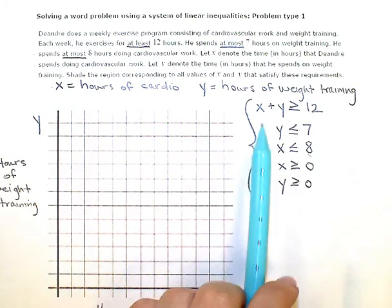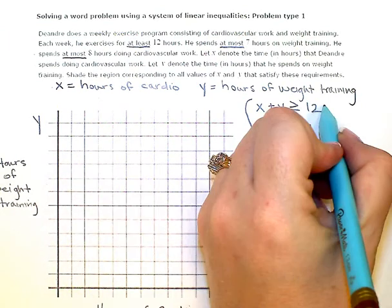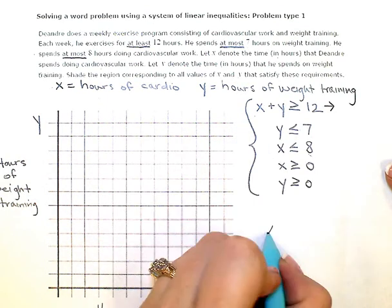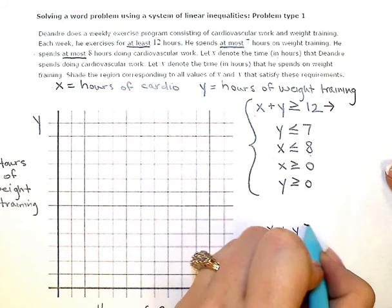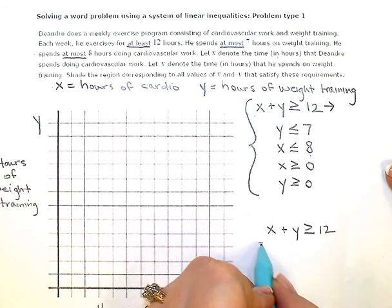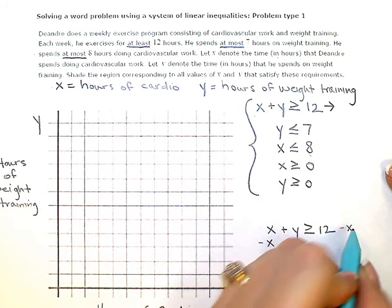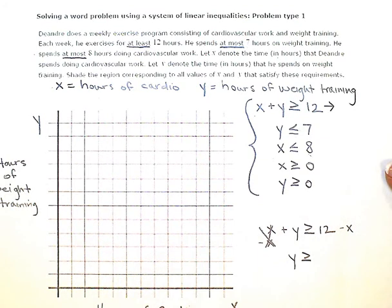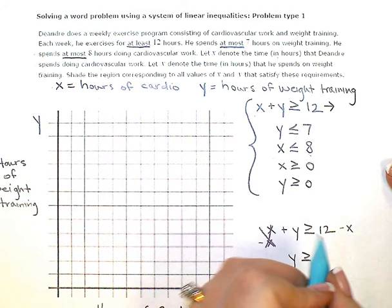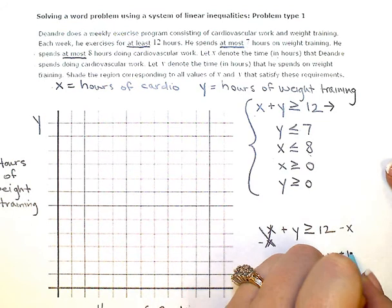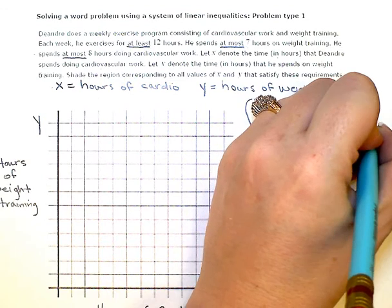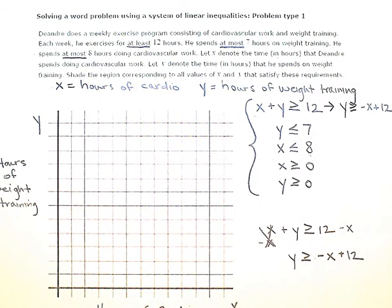So I'm just going to start this one. I need solved for Y. So if I subtract X from both sides, I'm going to go ahead and write this just down here, do a little scratch work. So X plus Y greater than or equal to 12. If I subtract X from both sides to isolate that Y, or get the Y by itself, I end up with Y greater than or equal to, I'm actually going to put the X term first, negative X plus 12. So I'm going to just rewrite that up here. Y is greater than or equal to negative X plus 12. Okay, now I'm going to go ahead with my graphing. So I'm going to graph this line first.